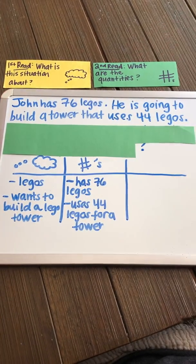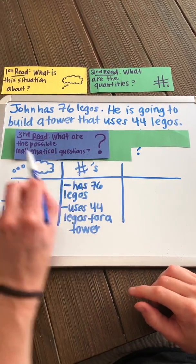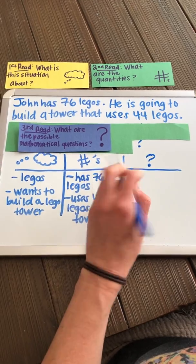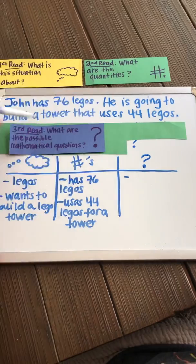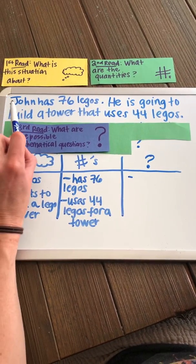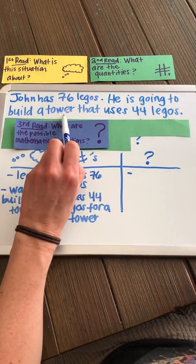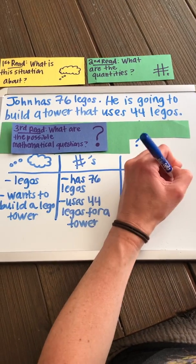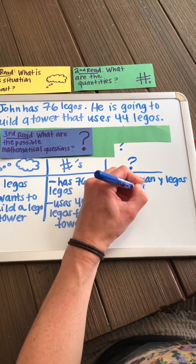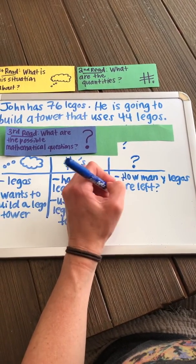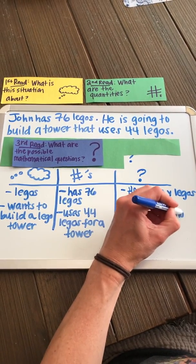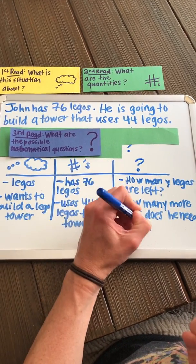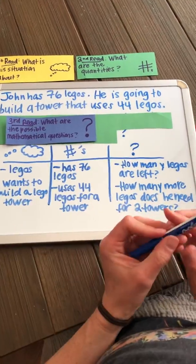Now we're going to read this problem one more time. This time we are looking at what questions they could ask me about this situation. In this third column I'm putting a question mark, because we're going to brainstorm what questions could be under this green sheet of paper. Let's read it again. John has 76 Legos. He is going to build a tower that uses 44 Legos. They could ask me how many Legos are left. They could also ask me how many more Legos does he need to build two towers.